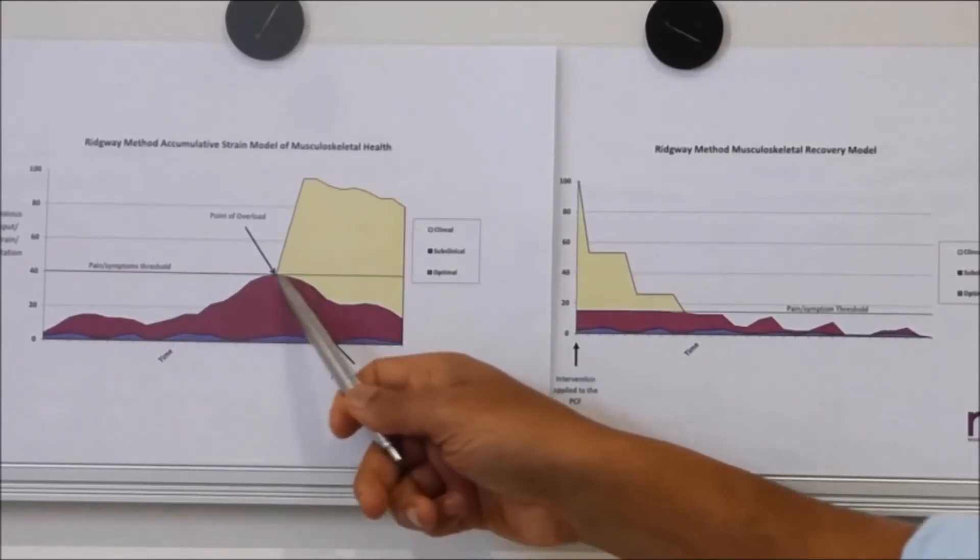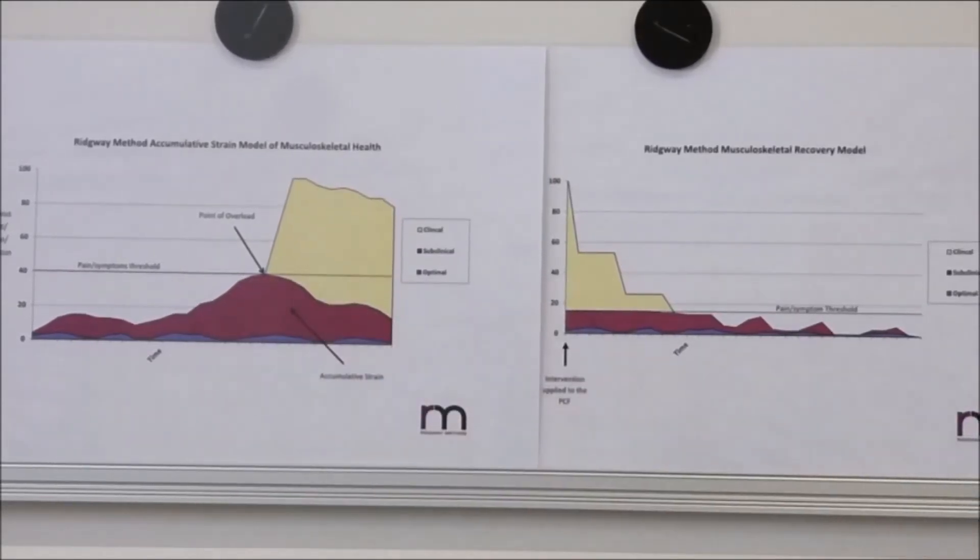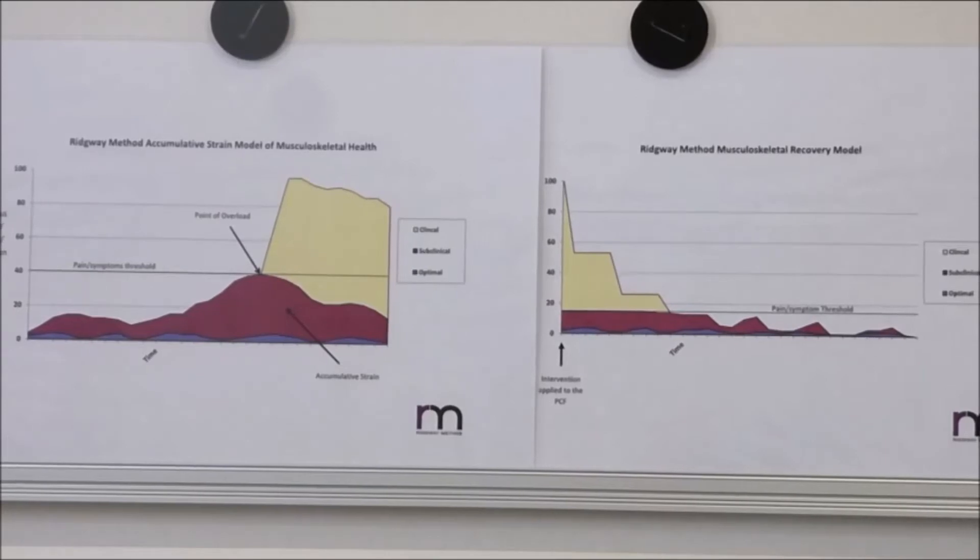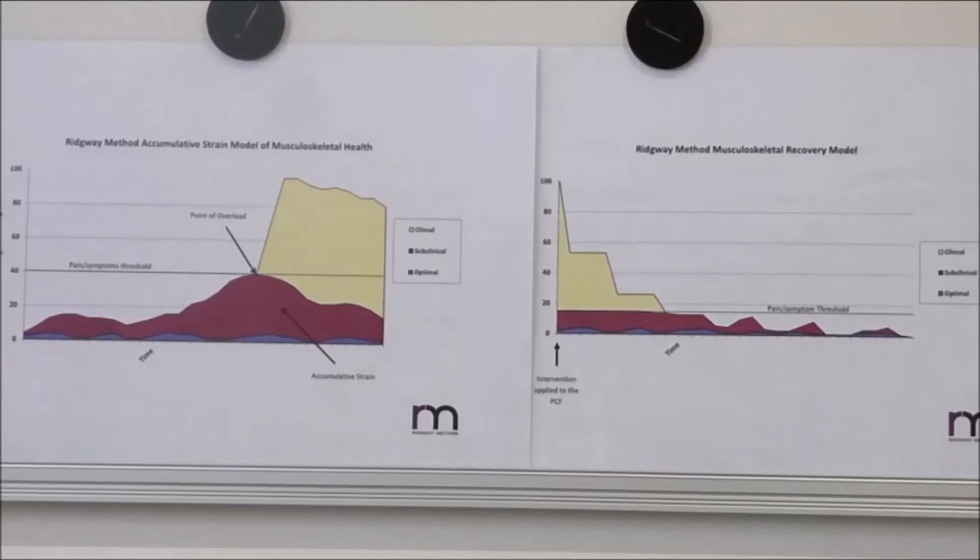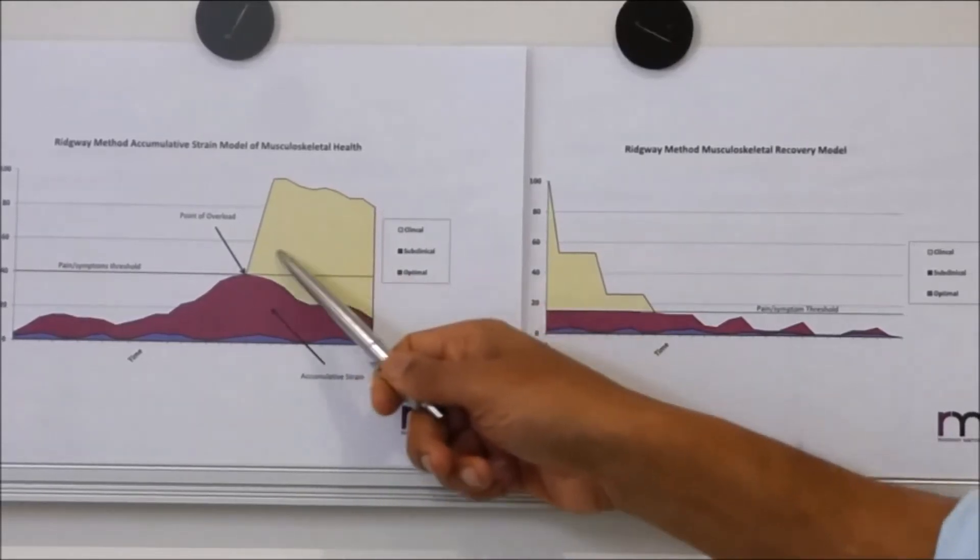If the strain builds up above this threshold line, your brain perceives there's a problem and will send you a warning sign. The warning sign is generally pain or symptoms, and we can see that in this part of the graph here.